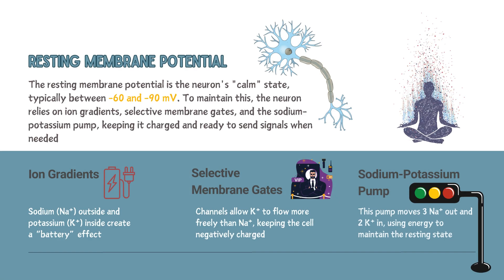First, we're diving into one of the most essential neuron states: the resting membrane potential — the neuron's calm state where it's not firing but primed to act. This resting state is maintained by three main processes. One: ion gradients — sodium and potassium ions are kept in specific balances across the neuron's membrane, creating a battery effect, much like a charged phone ready for use.